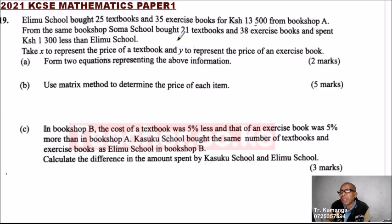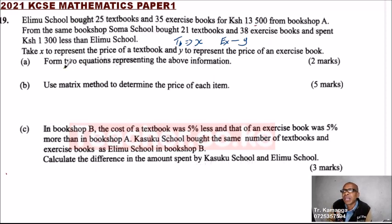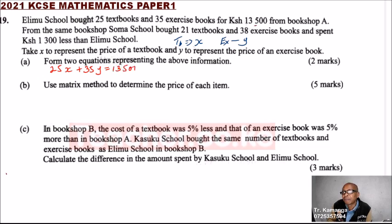We use X for textbook and Y for exercise book. Looking back at the question, for Erimu school we have 25X — that is 25 textbooks — plus 35Y for 35 exercise books, equals the amount spent, which is 13,500 Kenyan shillings.